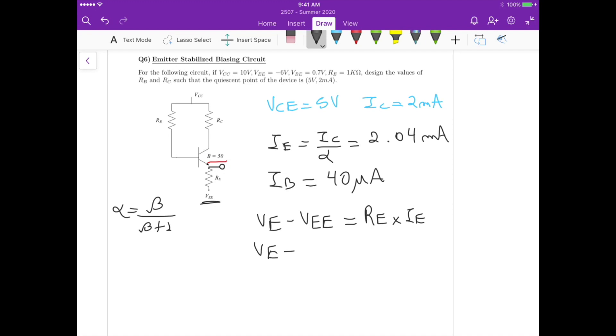So from this one here, we can actually calculate VE. So VE is going to be equals to those 2.04 milliampere times 1K, that's the value of the emitter resistance, plus VEE, which means it's plus minus 6 volts. So this gives us an emitter voltage that's equals to minus 3.96 volts.